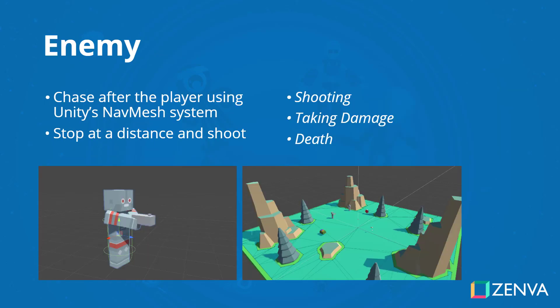Our enemies are going to be using AI navigation to walk around obstacles and chase the player. Unity has a built-in navigation system called NavMesh that we will be using, and along with that we will be adding our own AI elements such as the enemy stopping at a certain distance to shoot the player. Like the player, the enemy will be able to shoot, take damage, and die. When the enemy dies they will give a specific score to the player, and when the player reaches a certain score they win the game.